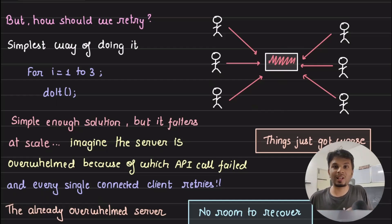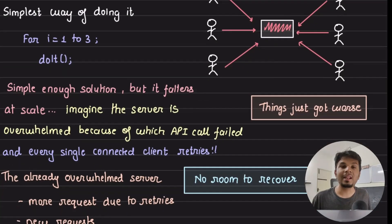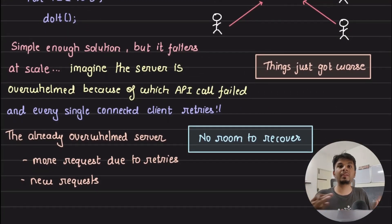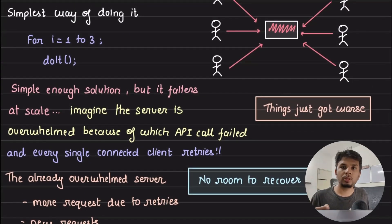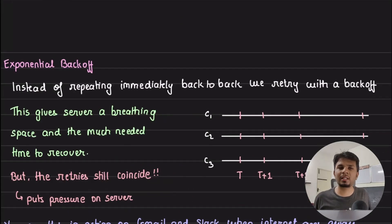Because of which, although the retries that we defined were supposed to recover from intermittent failure, are the root cause of this server not getting time to recover. So the outage prolongs. This is a classic problem. Now, if this doesn't work, how do we solve it? The for loop that we wrote in order to retry is as simple as i = 0 to 3, do it.